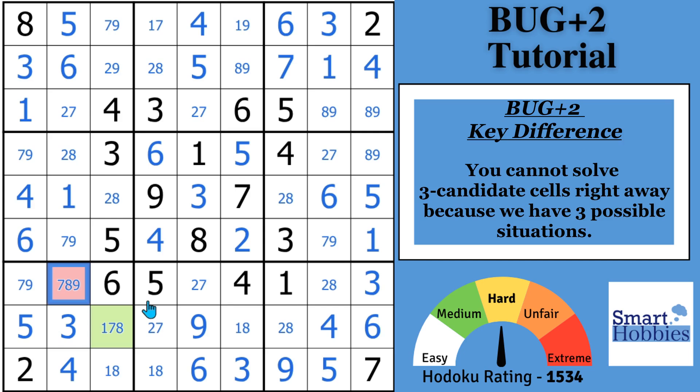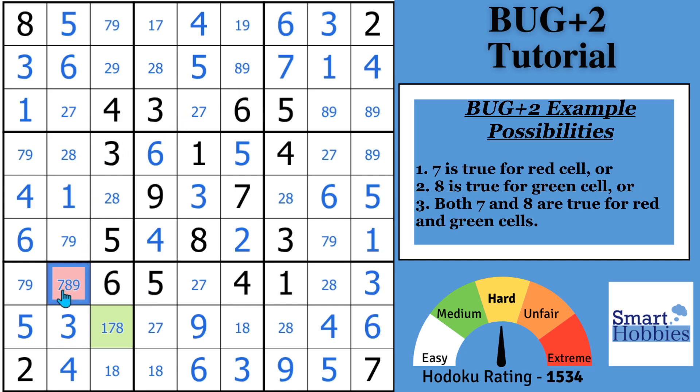Instead, what you'll know is there's three different possibilities now. Possibility one is that a seven is in the red cell. Possibility two is that the seven is there and the eight is there.